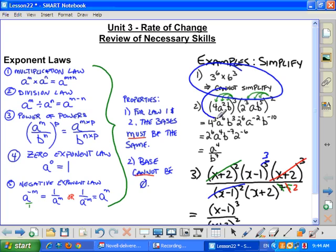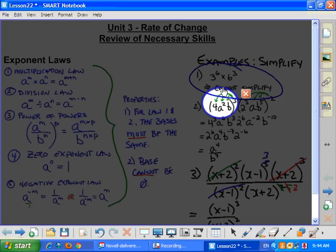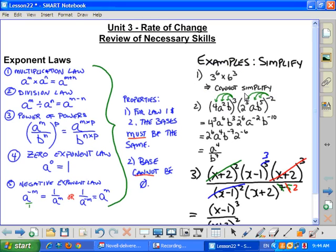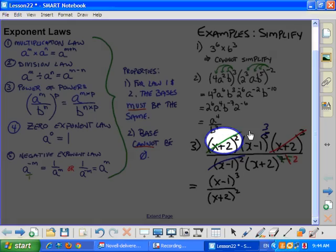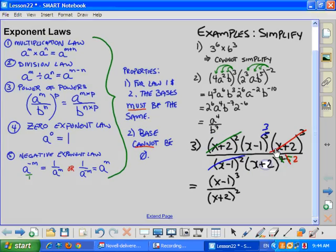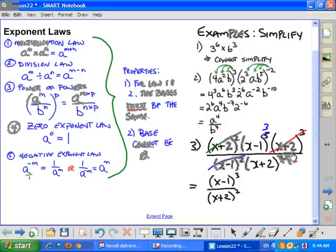Remember that the bases have to be the same in order to simplify. Remember when you are doing a Power of Power, that 3, the external exponent, needs to be distributed into each term inside the bracket. And then also, when you have like expressions in the numerator and the denominator, they also simplify. You make the decision as to what you need to copy in order to be successful with that topic.